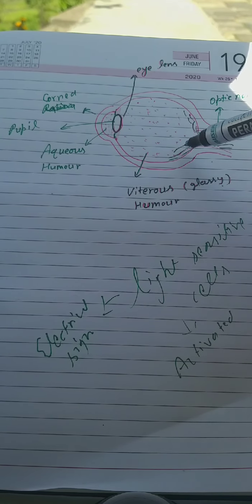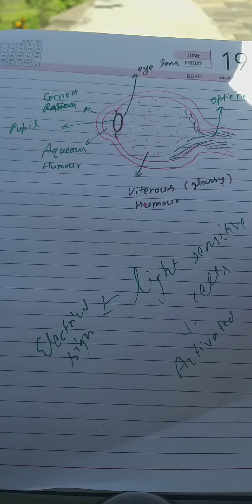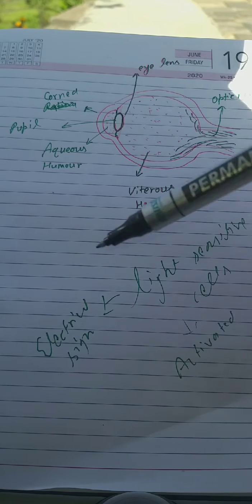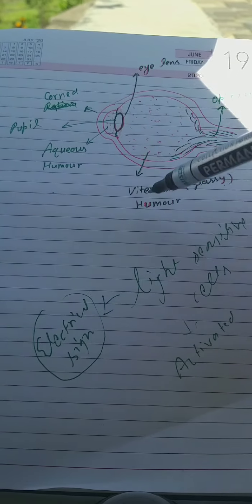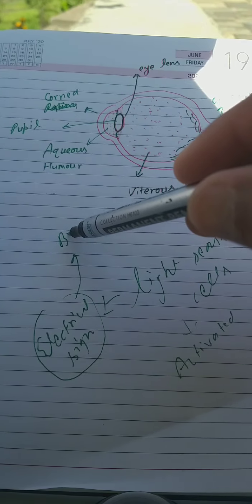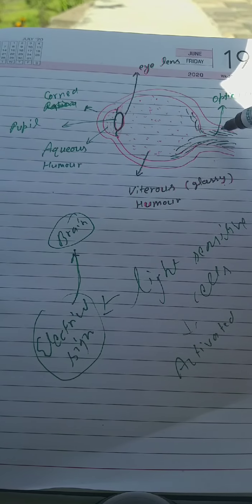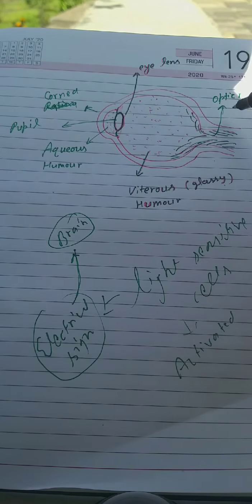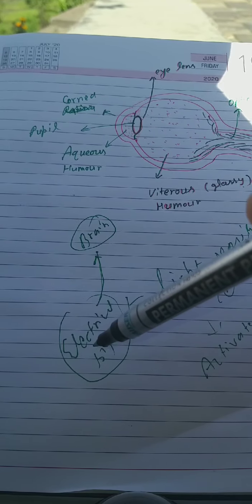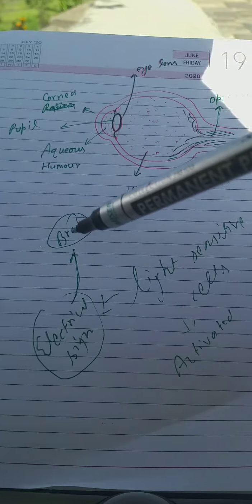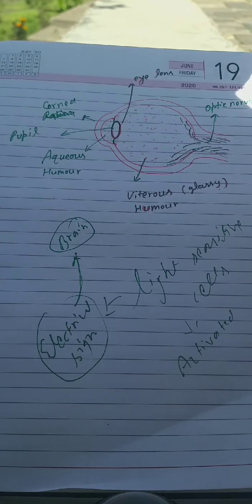When the light is incident on this retina, the light-sensitive cells get activated and convert the light rays into electrical signals. These electrical signals are then carried to the brain by the optic nerves. The brain then constructs the image and we are able to see the outer world.